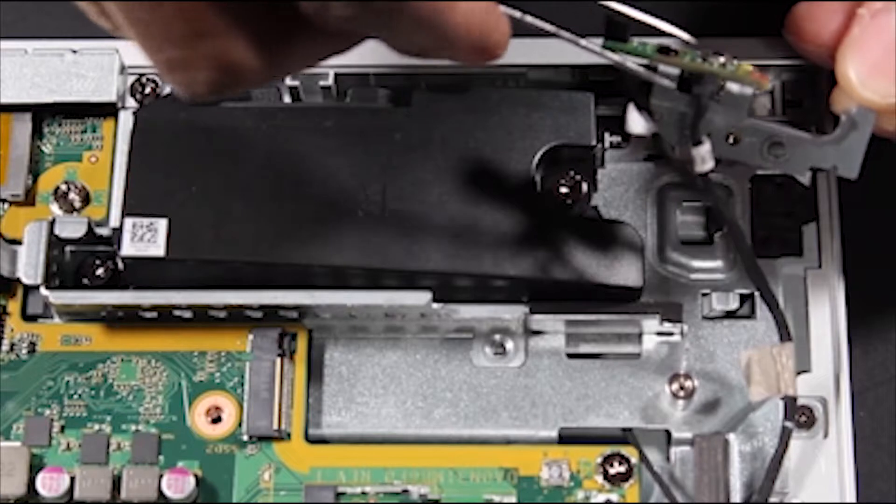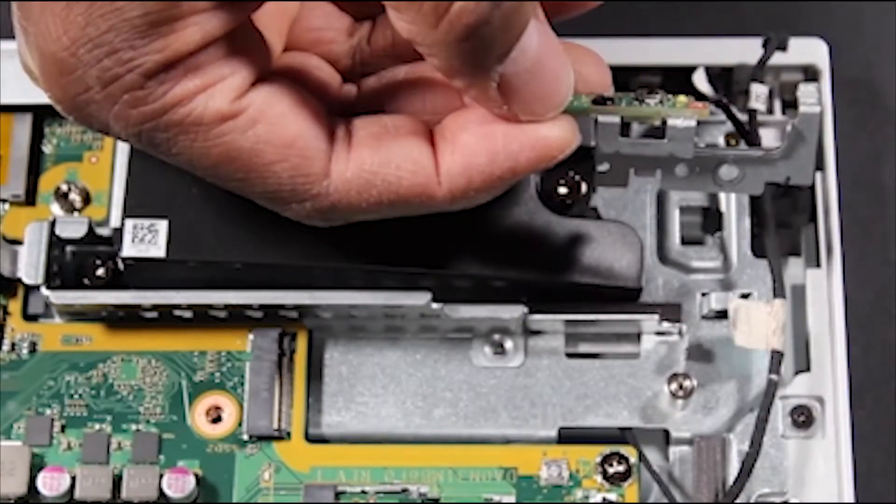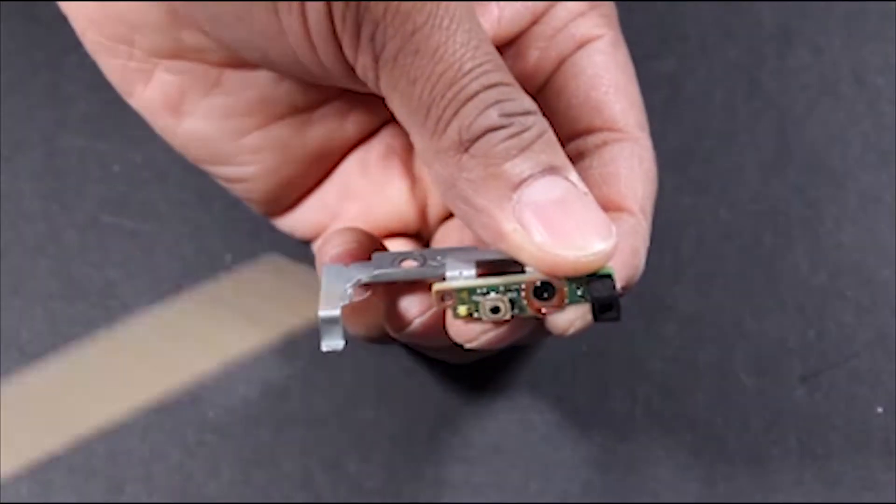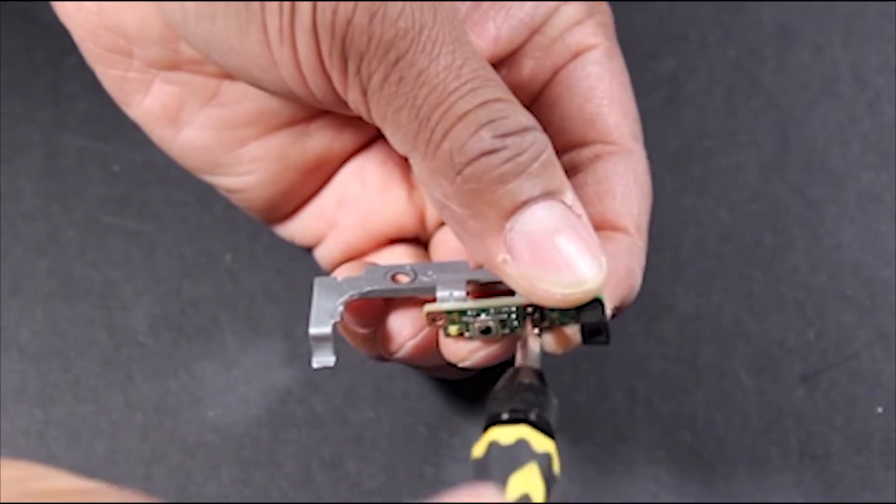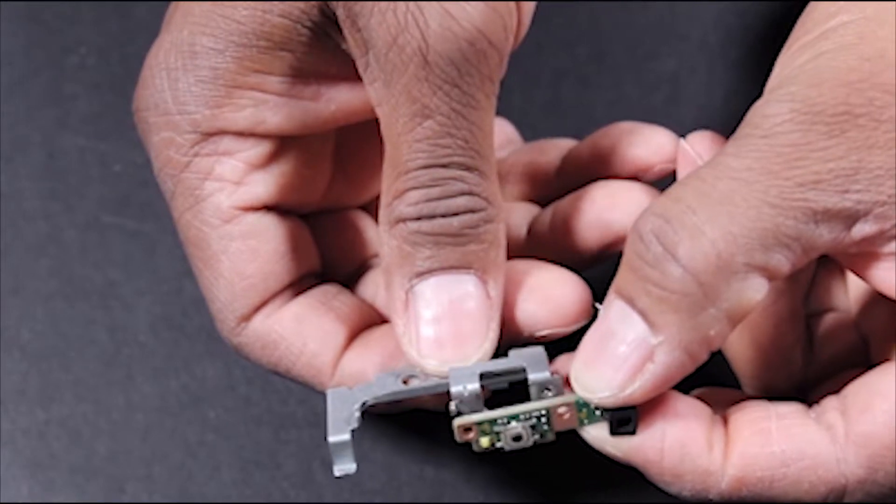Detach the power button board cable from the power button board and remove the power button assembly. Detach the Phillips number one screw that secures the power button board to its assembly. Tug the power button board off of its assembly.